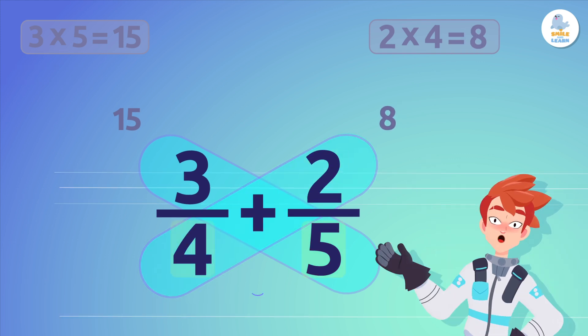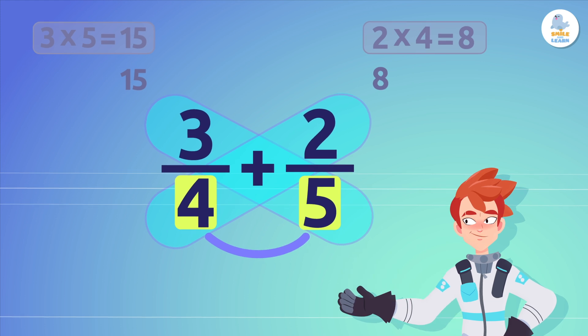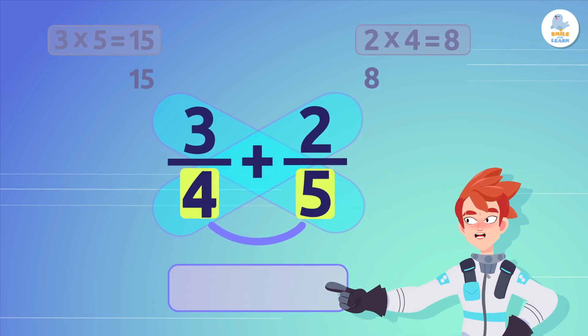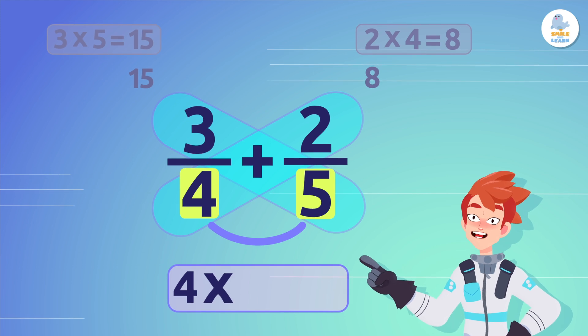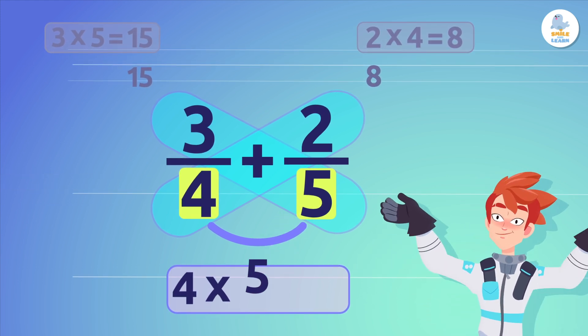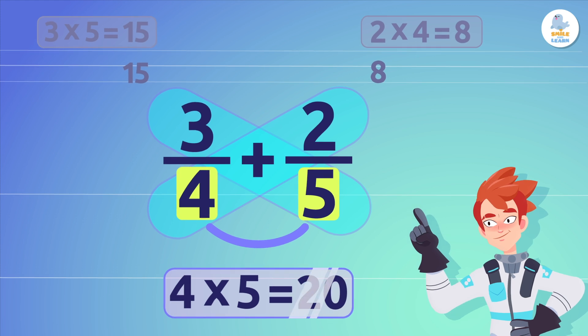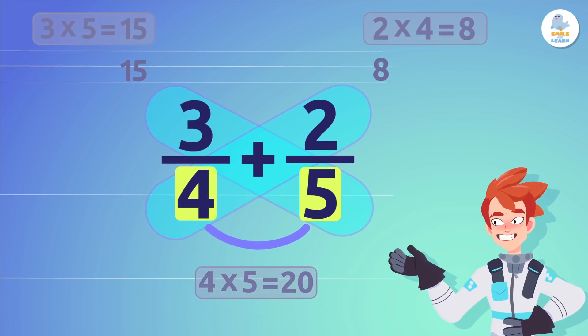Next, we multiply the denominators to build the base of the butterfly. We multiply the denominator of the first fraction, 4, by the denominator of the second fraction, 5. The result is 20. This is the denominator of the answer.